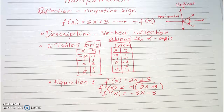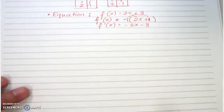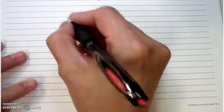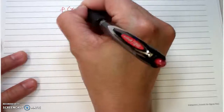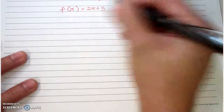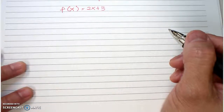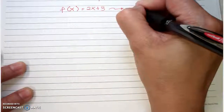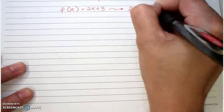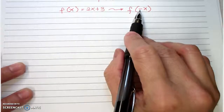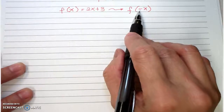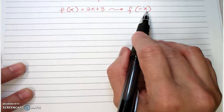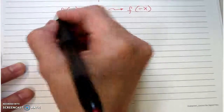The next transformation is a reflection about the y-axis. Given the same function f(x) = 2x + 3, a reflection about the y-axis happens when the negative sign is inside the function — that is, f(-x). This affects the x-values, or the independent variables.